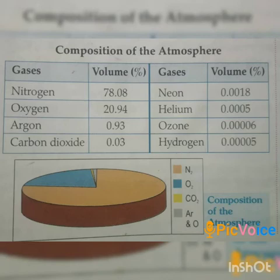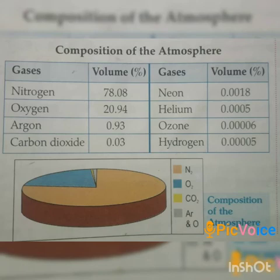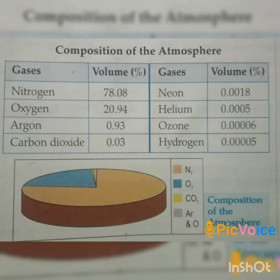The amount of carbon dioxide absorbed by the plants seems to be equal to the amount released by human beings and animals, which makes a perfect balance in our environment. But this balance is being disturbed day by day because factories, industries, vehicles, etc. are adding a huge amount of pollutants into it.